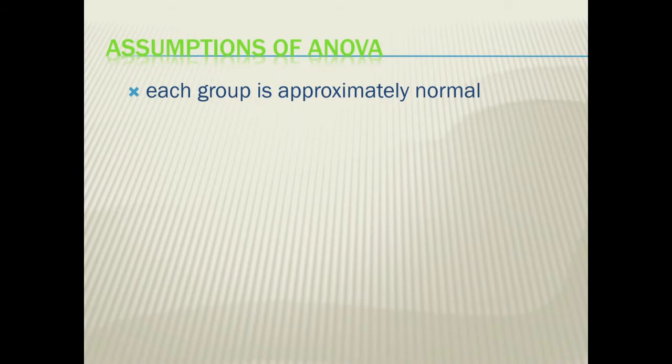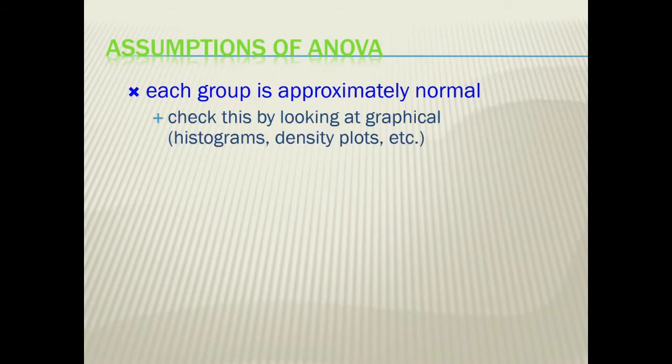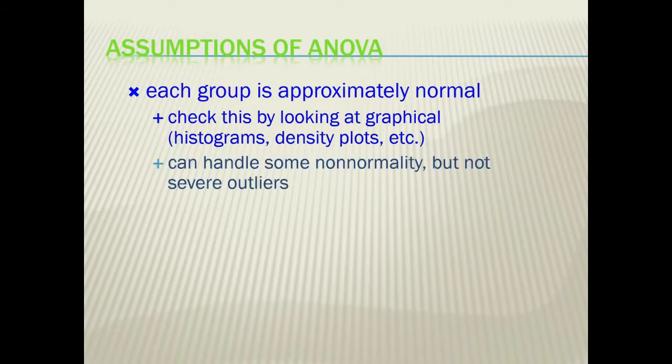So assumptions of our ANOVA. We're going to assume that each group is approximately normal. We're able to check on this by looking at graphical depictions, we can use histograms, density plots, box plots. We know that we can have some non-normality, but we really do not want severe outliers. This can really skew our results.